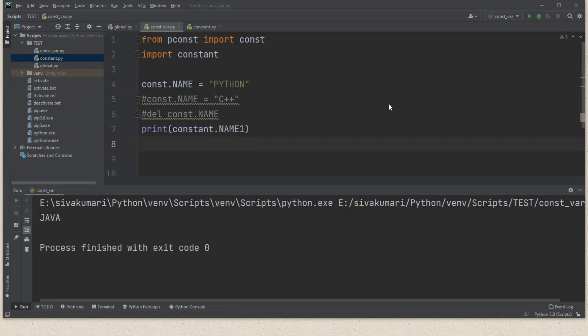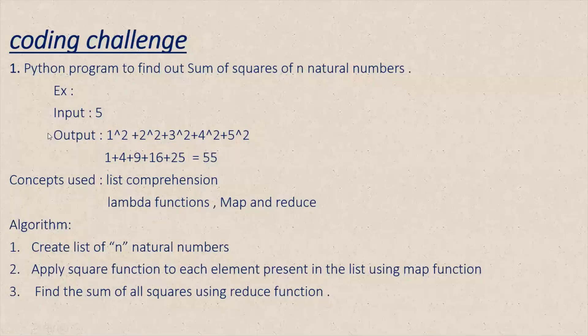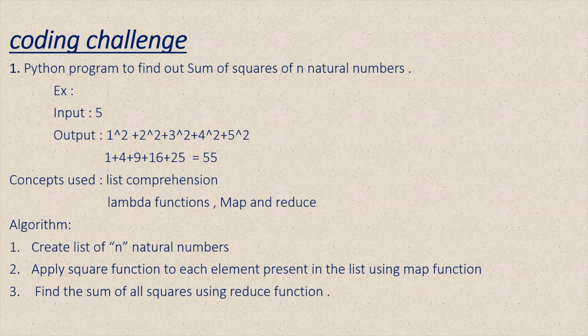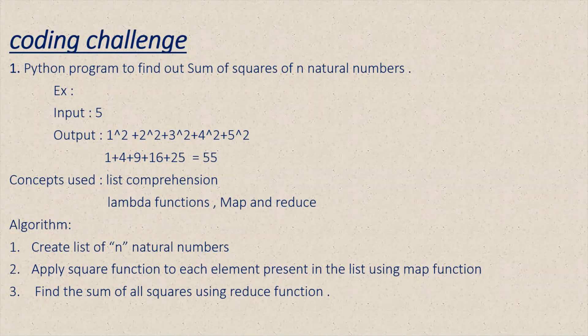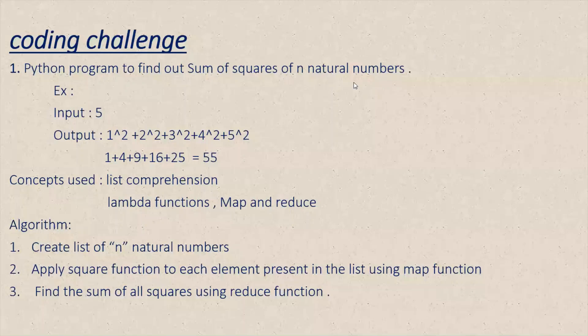Now we'll see the coding challenge: find the sum of squares of the first N natural numbers. If the input is five, you need to find the sum of squares of the first five natural numbers. I have used list comprehensions, lambda functions, map, and reduce to implement this logic. The algorithm is: first create a list of N natural numbers, then apply a square function to each element using map, then find the sum of all squares using reduce.